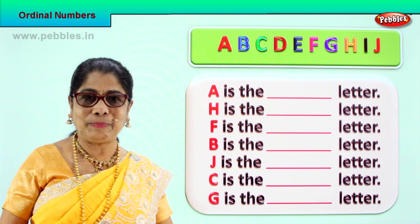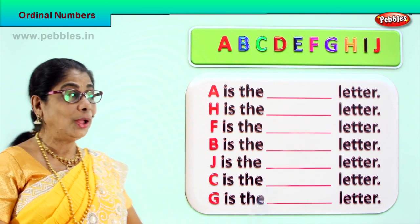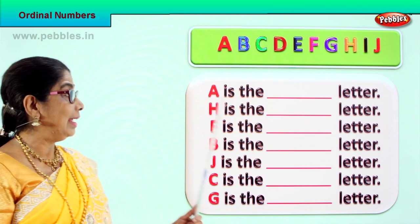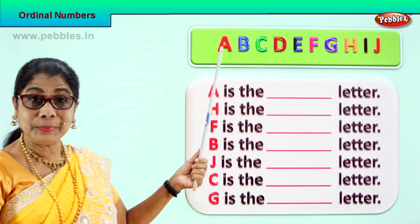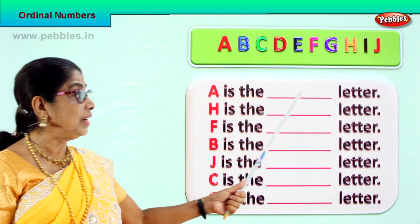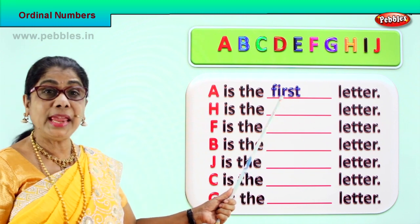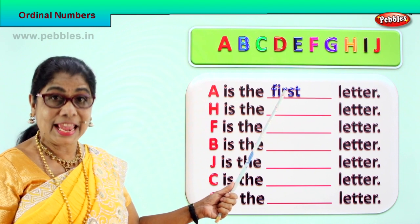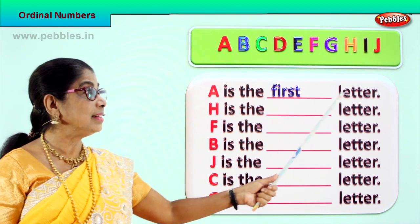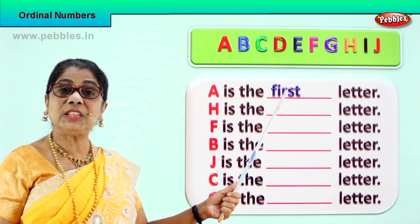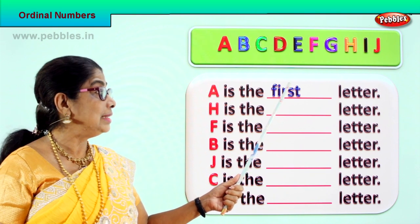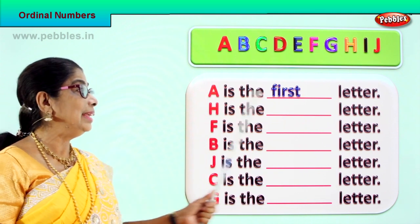The ordinal number of A — the letter A is in what place? You tell me. First place — correct! So you write: A is the first letter. Spell first: F, I, R, S, T. First. A is the first letter.